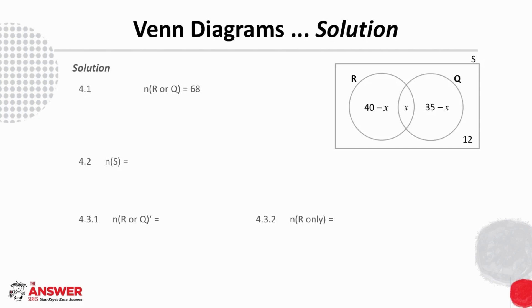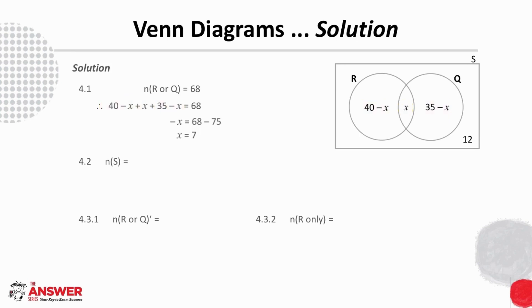In order to solve for X we use the information that the number of elements in R or Q is 68. We add all of these together and set them equal to 68, and we see that X is 7. For 4.2, to get the number of elements in the sample space, we add the number of elements in R or Q and the number of elements outside of R or Q: 68 plus 12 gives us 80 elements in total.